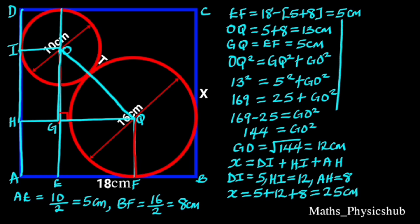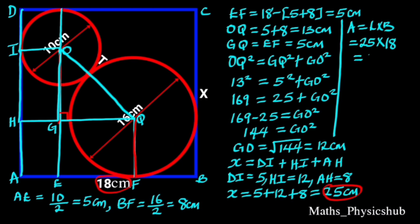To find the area of the rectangle: the area of a rectangle is given by length times breadth. The length of the rectangle is 25 cm and the breadth is 18 cm. Substituting these values gives area equals 25 times 18, which is 450 cm².